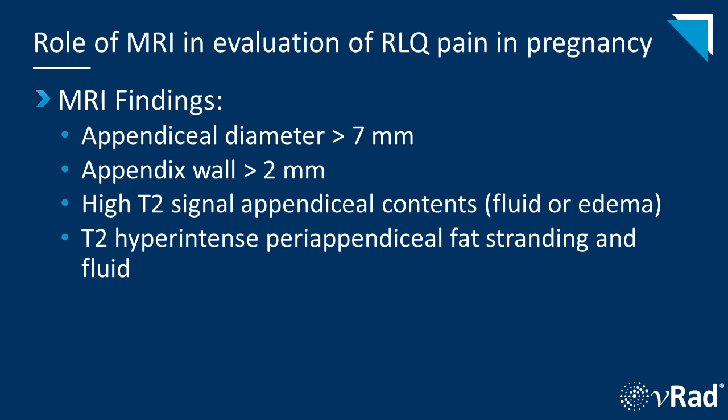Moving on to an abnormal appendix. The findings again follow logically from what we know from CT. The appendiceal diameter is greater than 7mm, the appendiceal wall is greater than 2mm, there's high T2 signal in the appendiceal contents — which is generally fluid or edema — and there's T2 hyperintense periappendiceal fat stranding or fluid. You're relying on multi-planar T2 and T2 fat-suppressed imaging mostly to find the appendix and the adjacent inflammatory changes.